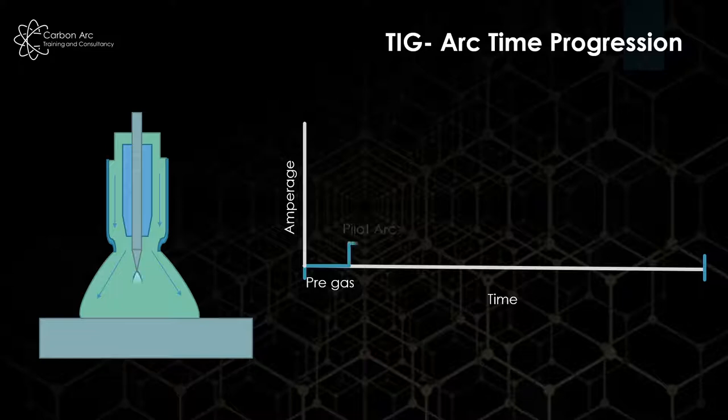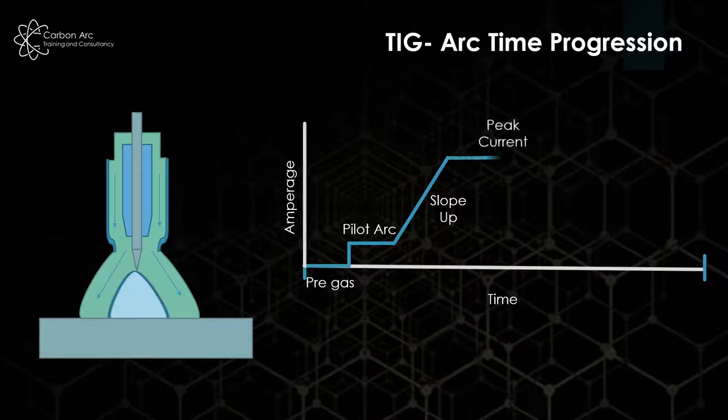Some sets allow for a pilot arc to start, a very low amperage arc which allows you to find your place and get things running. Then it will go through a slope up, taking it from either zero amps or from your pilot arc setting up to our peak current. The slope up allows no thermal shock and controlled weld pool stabilization getting to where we want to be.